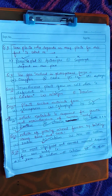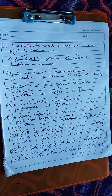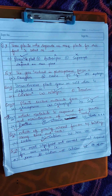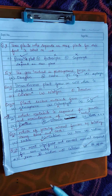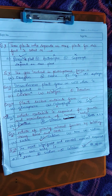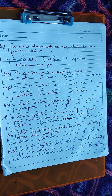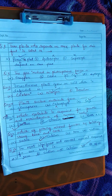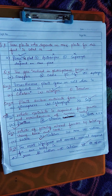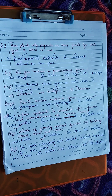Question nine: which gas do plants use in photosynthesis? Options: oxygen, ozone, CO2, hydrogen. The answer is CO2. Question ten: insectivorous plants grow on soil which is deficient in — options: carbon, nitrogen, potassium. The answer is nitrogen.